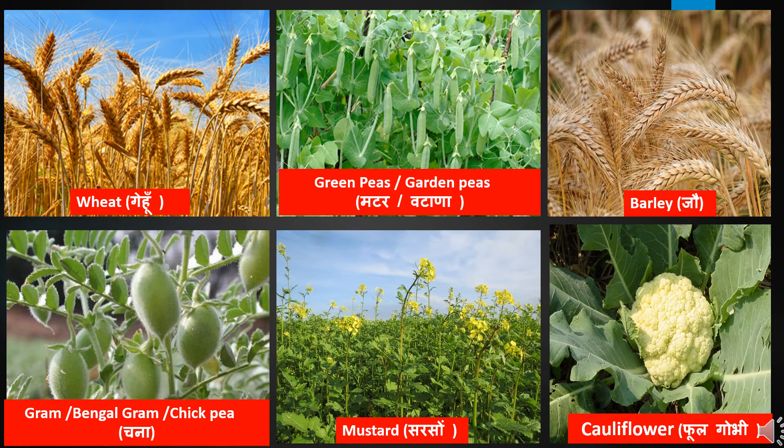For Rabi season, the most important crops are wheat, barley, green peas, gram, mustard and cauliflower. Other Rabi crops include sugarcane, potato, safflower, sunflower, linseed and radish.